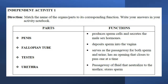Independent Activity 1 — Direction: Match the name of the organs and parts to their corresponding function. Write your answers in your activity notebook. Parts listed: Penis, Fallopian tube, Testes, Urethra, Vas deferens. Functions: produces sperm cells and secretes the male sex hormones; deposits sperm into the vagina; serves as passageway for both sperm and urine; has an opening that closes to pass one at a time; passageway of fluid that neutralizes to the urethra; stores sperm.